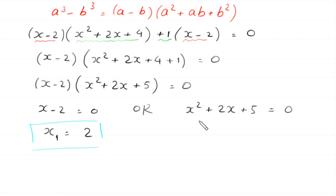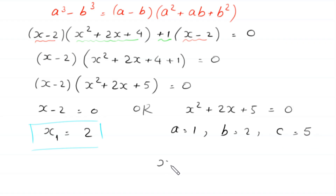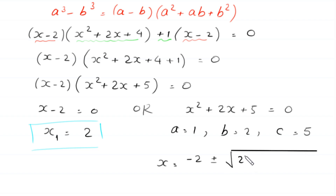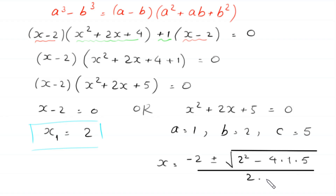To find another two solutions, we solve this quadratic equation. This is not factorable, so we solve it by the quadratic formula. In this equation, a is equal to 1, b is equal to 2, and c is equal to 5. According to the quadratic formula, x is equal to negative b, which is 2, plus or minus square root of b squared minus 4ac. In place of b squared, we write 2 squared minus 4 times a, which is 1, times c, which is 5, divided by 2 times a, which is 1.